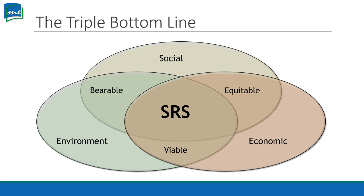We can prove to our customers who may be concerned about this that we're doing what we can as a company, using this triple bottom line, to ensure we're responsible in our sourcing. This topic is only this one slide. Next, we're going to start talking about some tools — specifically contract management software. I look forward to seeing you in the next video.